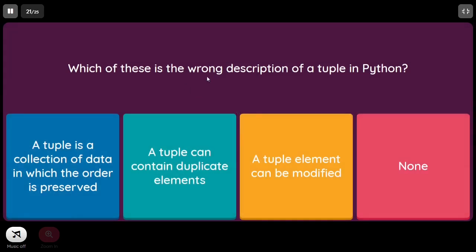Which of the following is the wrong description of a tuple in Python? A tuple is a collection of data in which order is preserved — true. A tuple can contain duplicate elements — true. A tuple element can be modified — this is the false statement, since tuples are immutable.